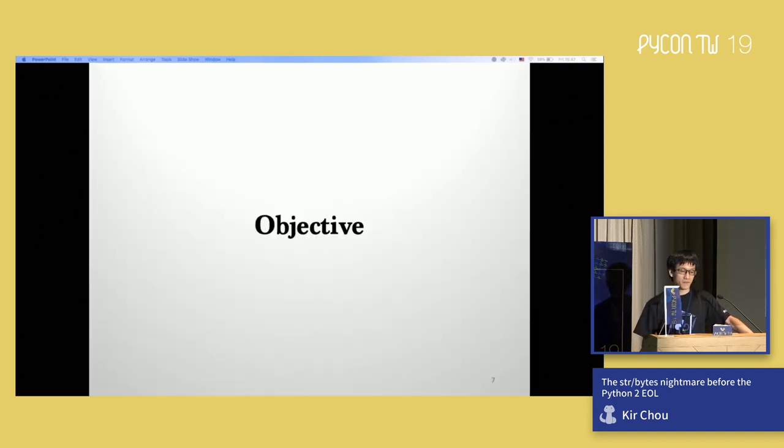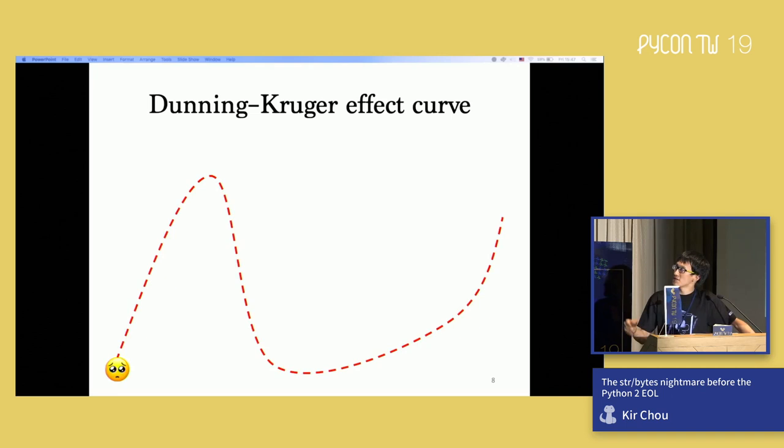Let's talk about objective. I want to use this Dunning-Kruger effect curve to explain. At the beginning, people learn Python and feel like they want to learn Python. Later they start to research how to use the Python interpreter, how to run Python. Finally they can run print hello world and are very happy about that.